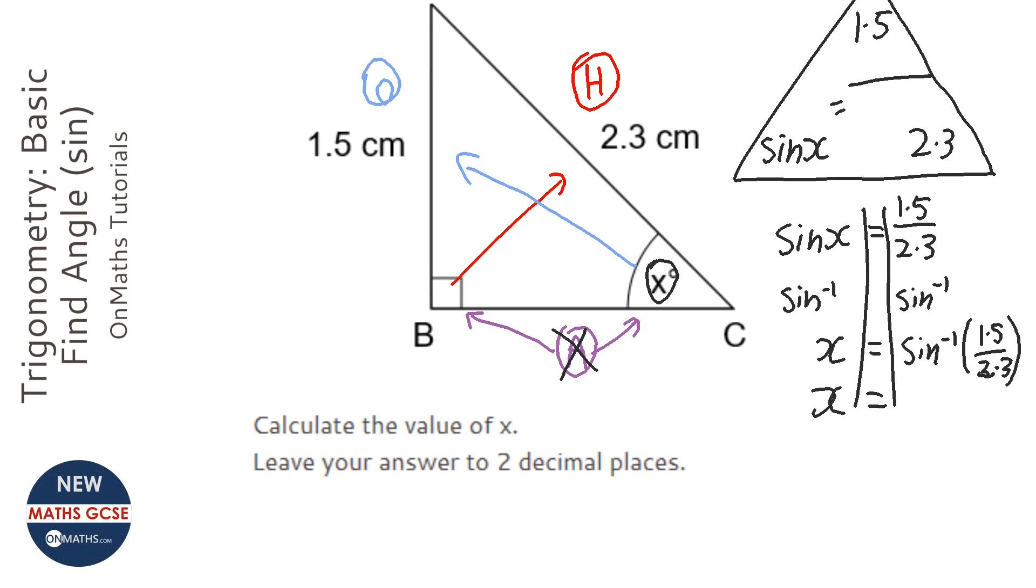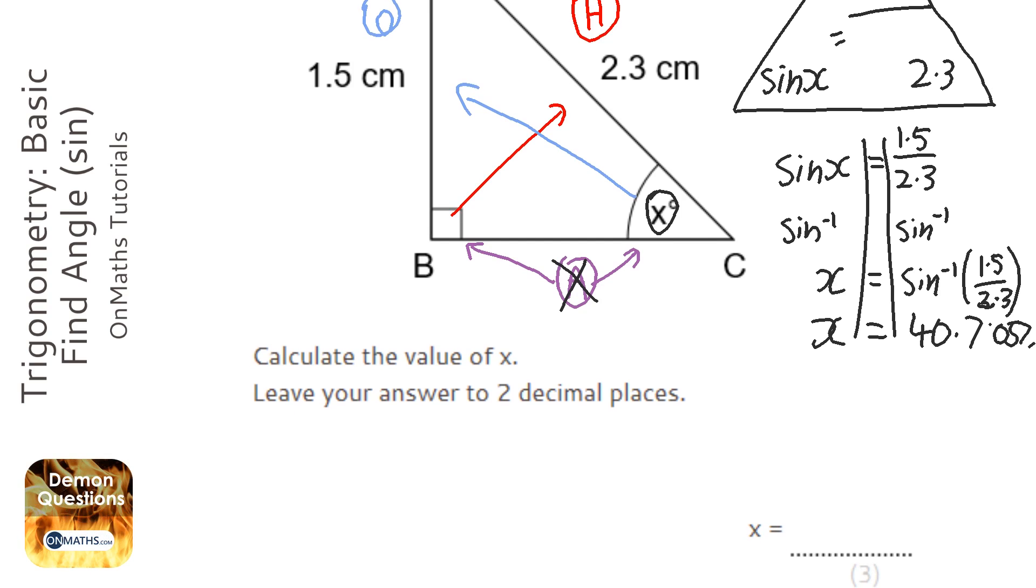When I've done that, I have x equals 40.7057. So to two decimal places, this is going to be 40.71.